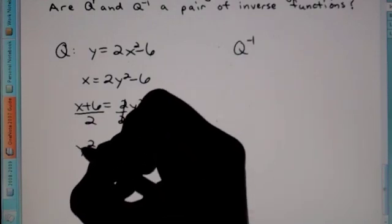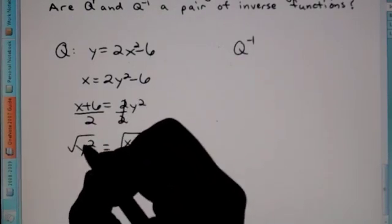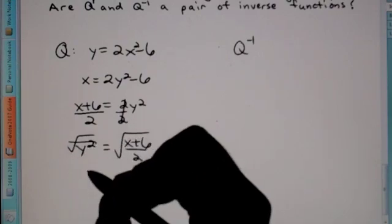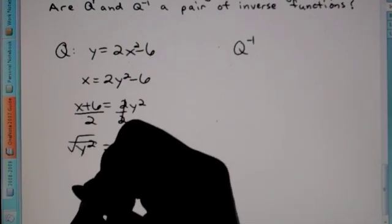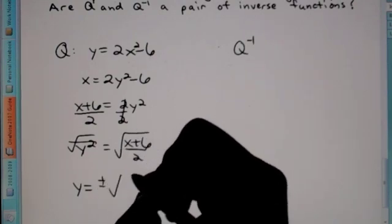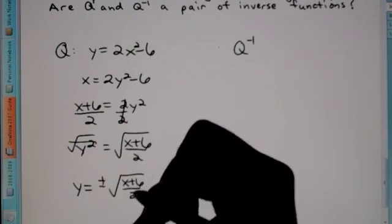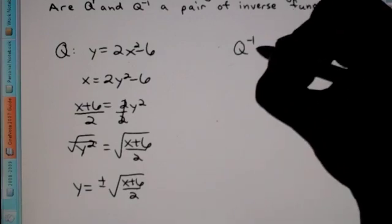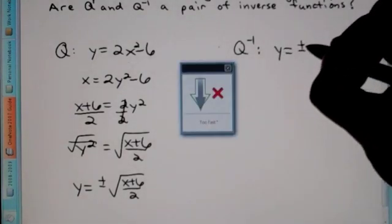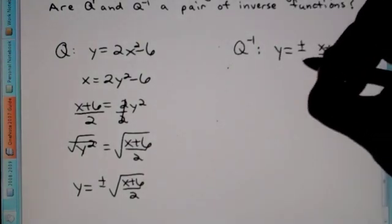Lastly, to get rid of the square we take the square root. Remember, whenever you take the square root of a variable in an equation, the other side is going to be plus or minus. So y equals plus or minus the square root of (x plus 6) over 2. This is our inverse.